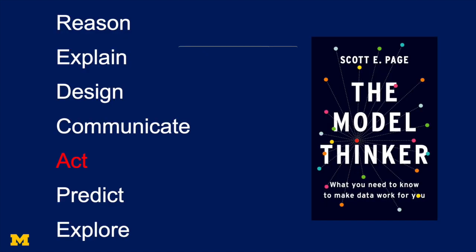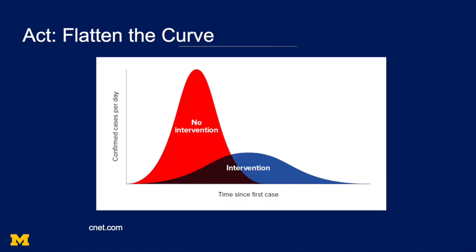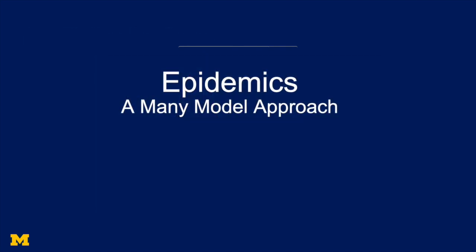How then do we use this model to act? We've used it to explain the pattern. How can we use it to act? In particular, people talk about flattening the curve. How do we flatten the curve? How do we make that slope less severe?